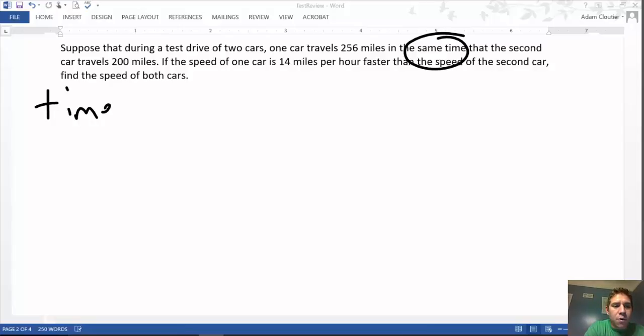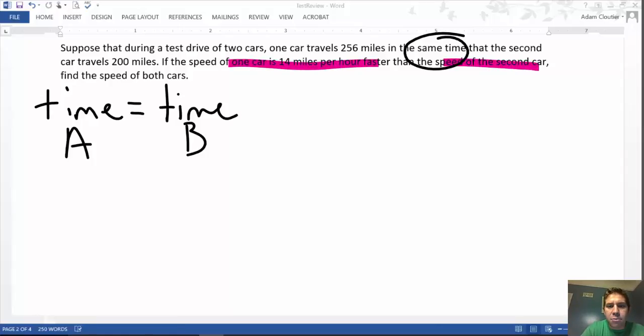In other words, what we're looking for is the equation that says something like time for car A is equal to time for car B. And just for fun, I'm going to call this car A and this car B.